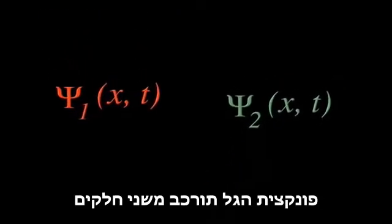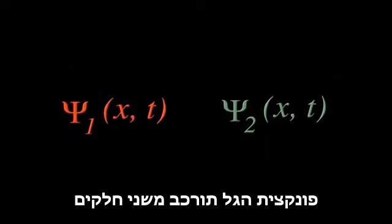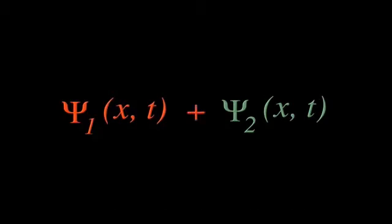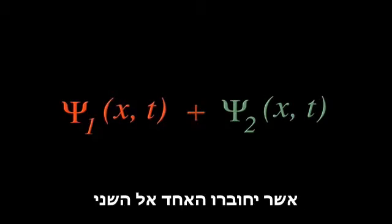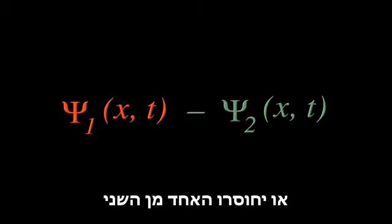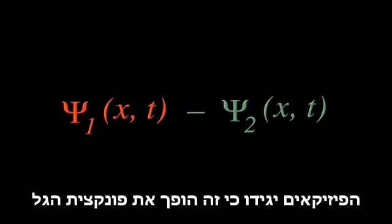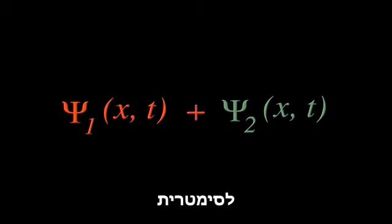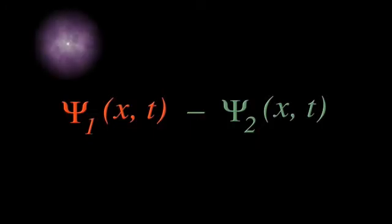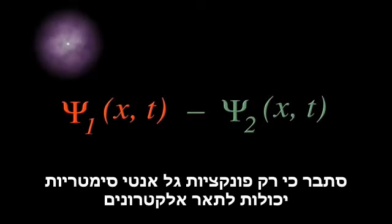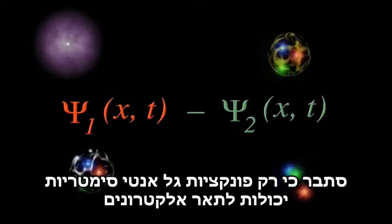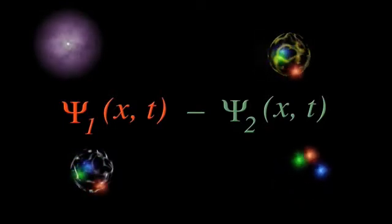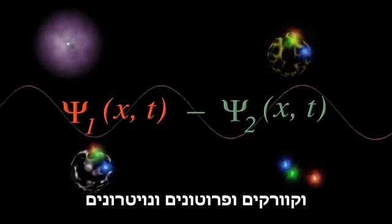This new two-particle wave function will have two parts to it, and those parts will either add or subtract. Physicists would say this makes the wave function either symmetric or anti-symmetric. And it turns out that only the anti-symmetric function works for electrons, quarks, protons, and neutrons.